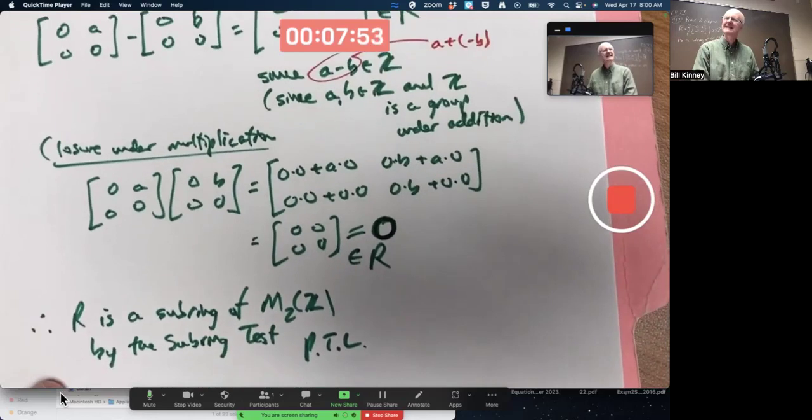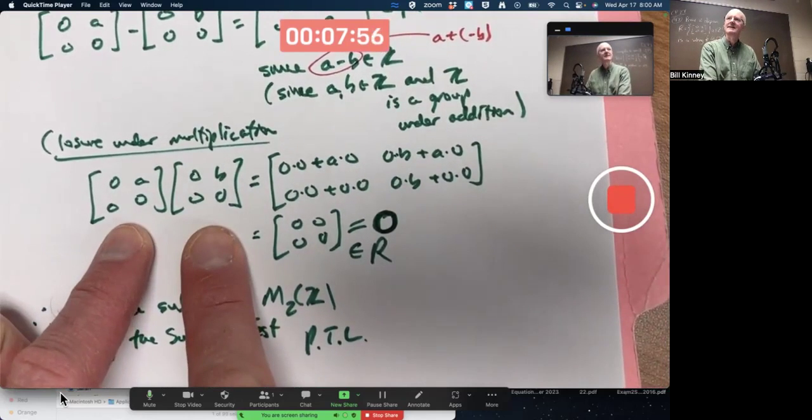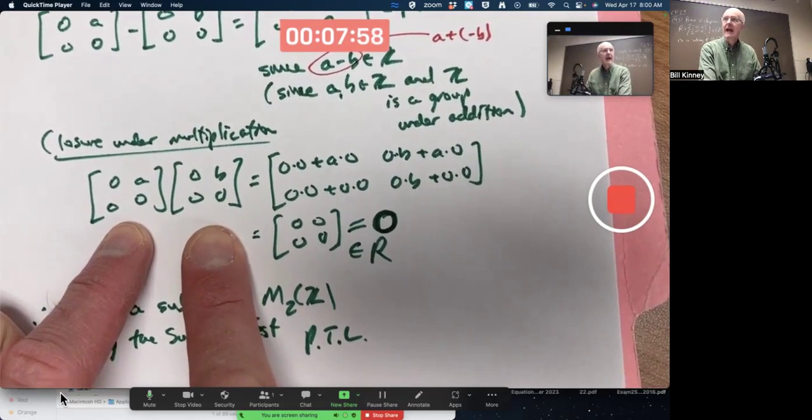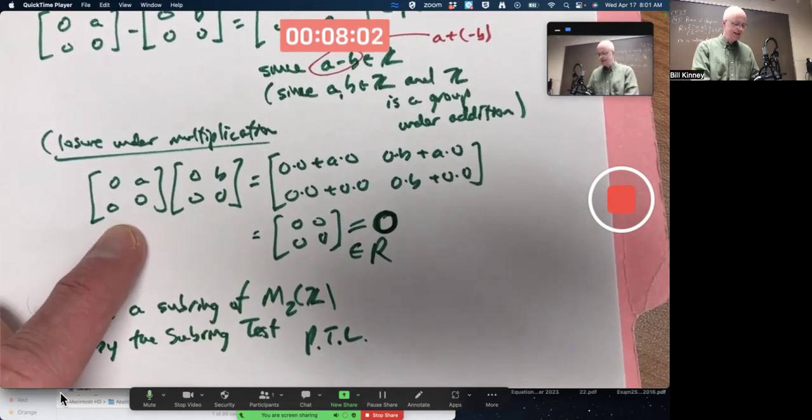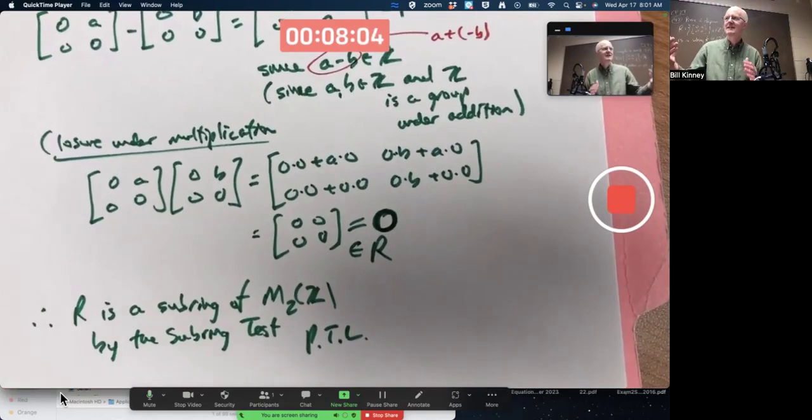But, yeah, this is kind of strange. Take any two elements of this subring, which is a ring, it's a subring, and multiply them. You get 0. That should seem strange.